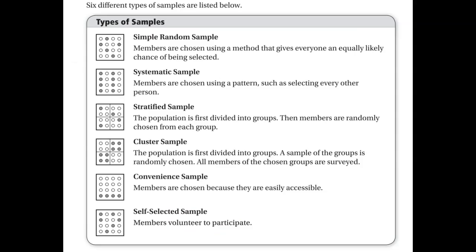We're going to talk about six different types of samples. Our first type is a simple random sample where members are chosen randomly and everybody has an equally likely chance of being selected. So when I used a random number generator to tell me which trees to sample, that's random. And that usually gives you the most unbiased sample.